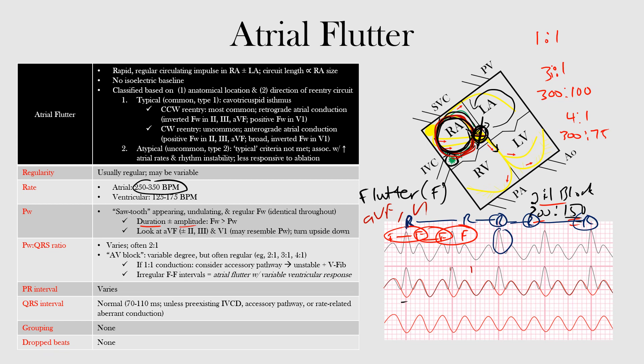In terms of intraventricular conduction, we should see narrow normal QRS complexes unless there is some pre-existing intraventricular conduction delay, accessory pathway, or rate-related aberrant conduction. Also note that if you encounter a rapid regular supraventricular tachycardia at exactly 150 beats per minute, you should still strongly look for atrial flutter even if you cannot observe flutter waves.